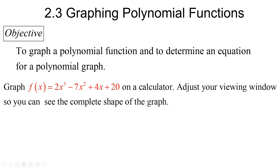Graph f of x equals 2x to the third minus 7x squared plus 4x plus 20. This is a cubic polynomial, so it could have three zeros — it does have three zeros if we think about double roots and things like that on a calculator. Then adjust your viewing window so you can see the complete shape of the graph.